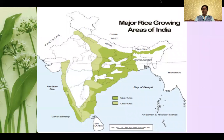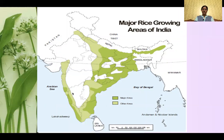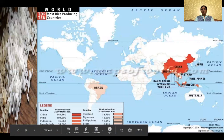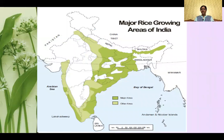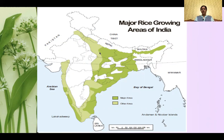In India, you can see that the Western Ghats coastal area along the Arabian Sea is a major rice-producing region. The Eastern Ghats also has significant cultivation. In Punjab and western Uttar Pradesh, rice is also widely grown.